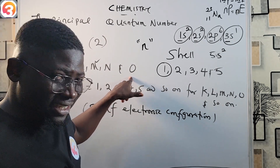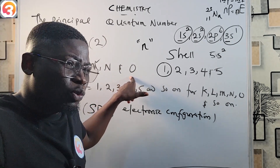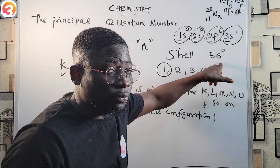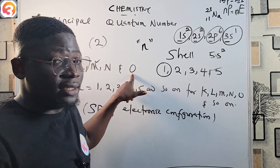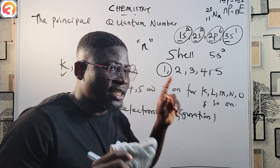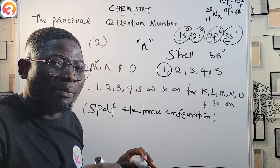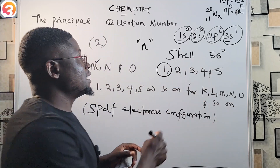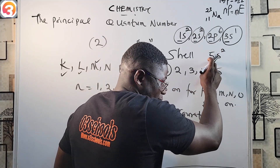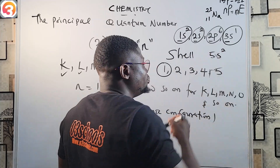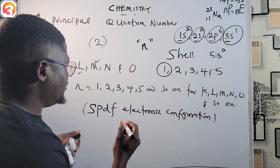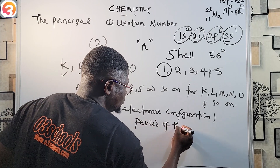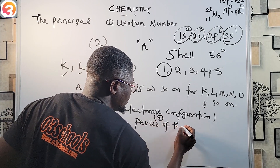So the principal quantum number gives the information of the shell where the outermost electron belongs. It can also tell you the period to which the element belongs in the periodic table. For example, if the outermost electron is 5s², the element belongs to period 5 of the periodic table.